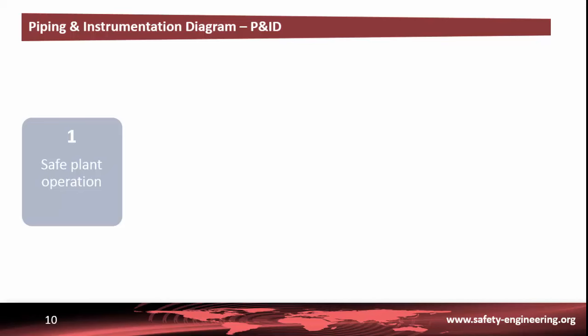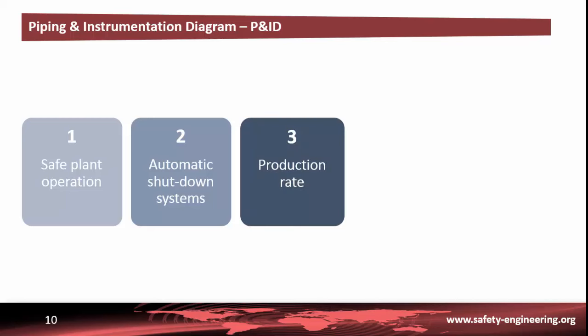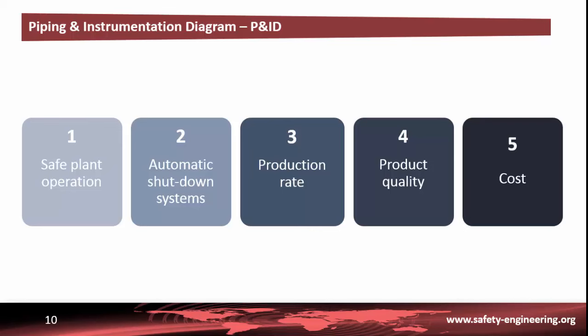Contrary to the PFD diagrams, P&ID diagrams show the various control loops and instruments in detail, with an identification number. The primary goals of the designer when specifying instrumentation and control schemes are: first, to keep the process variables within the known safe operating limits; second, to detect dangerous situations as they develop and to provide alarms and automatic shutdown systems; third, to provide interlocks and alarms to prevent dangerous operating procedures; fourth, to achieve the design product output and to maintain the product composition within the specified quality standards; and finally, to operate at the lowest production cost commensurate with the other objectives. These are not separate objectives and must be considered together. The order in which they are listed is not meant to imply the precedence of any one goal over another, other than that of putting safety first.